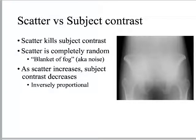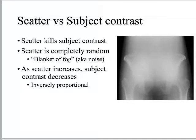Versus something like this, which is a piece of crap x-ray — this is the kind of stuff you get thrown out of x-ray school for making. Why? Because there is no contrast here. It's like walking in a fog. Scatter kills subject contrast. If you want to know how to get rid of subject contrast, go talk to Compton because it destroys subject contrast. It's completely random and happens in every possible direction — it is literally the x-ray equivalent of having to drive down the road listening to radio static over your favorite song. We call that the blanket of fog or noise. As scatter increases, subject contrast decreases — they are inversely proportional. Anything that causes an increase in scatter causes a decrease in subject contrast.